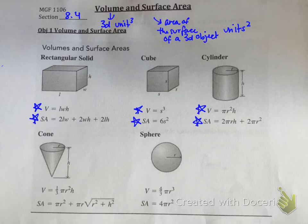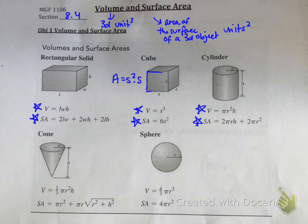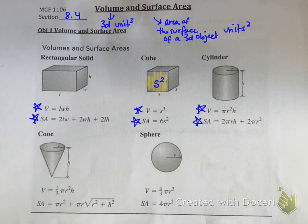For a cube, we previously found the area of a square was S squared. Now adding the element of height, we multiply by S, so the volume becomes S cubed. For surface area, we find the area of one face — that's S squared — and there are six faces to a cube, so the surface area becomes 6S squared.